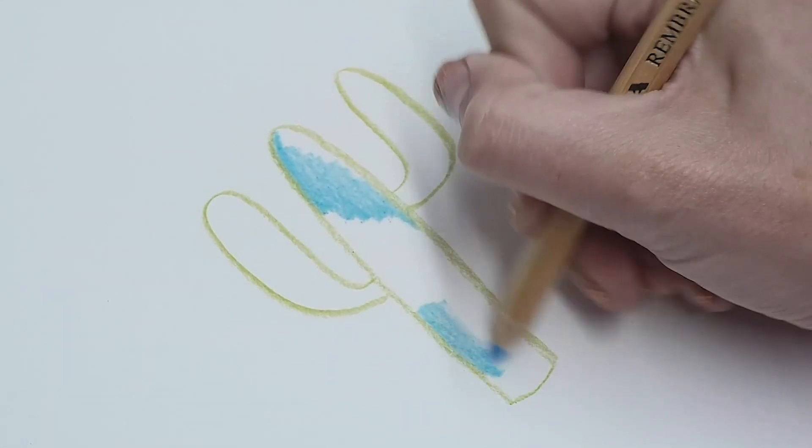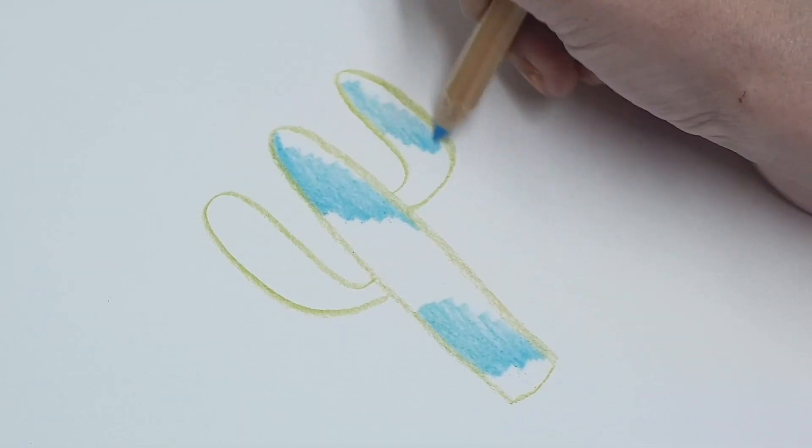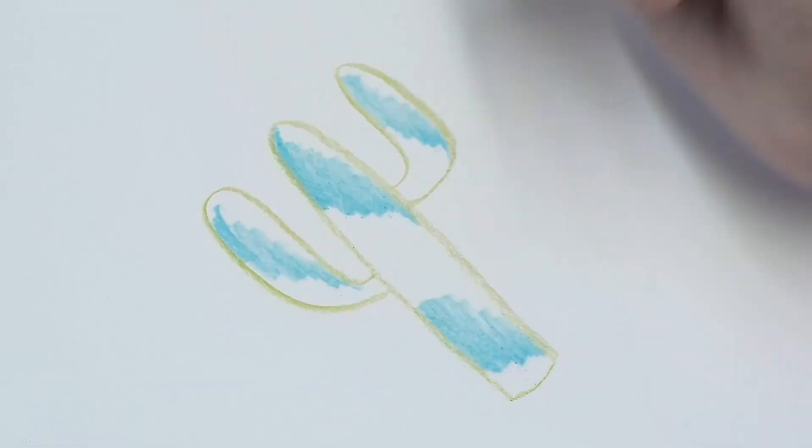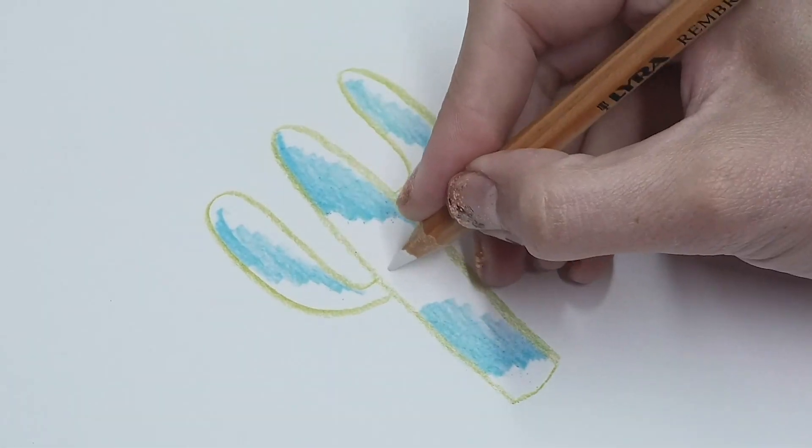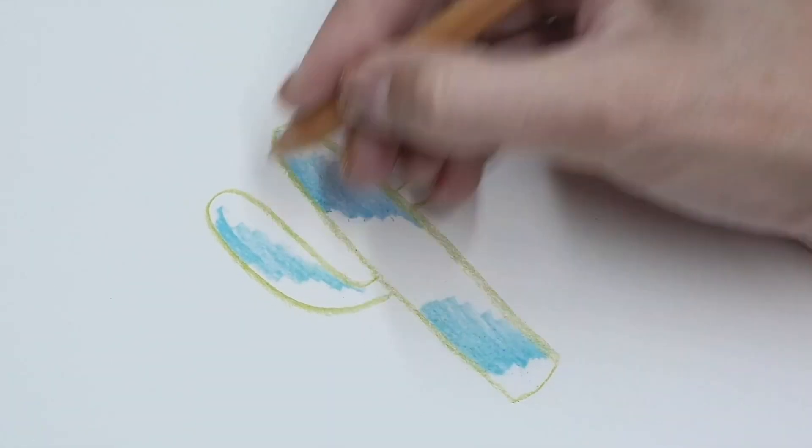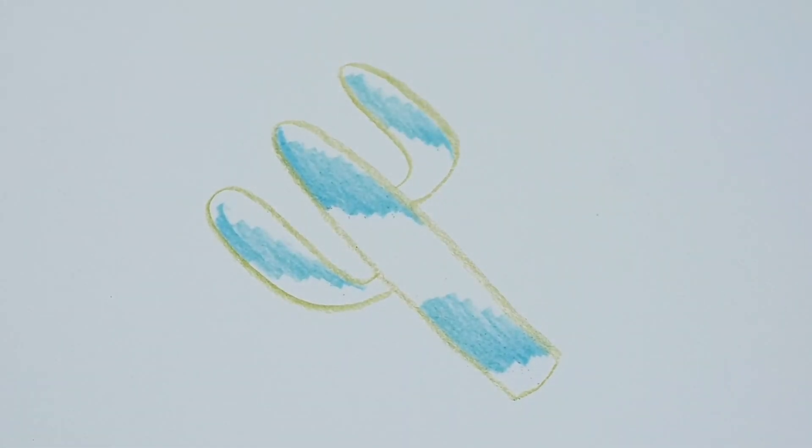Next you're gonna take the light blue and place it in a more diagonal shape. I like to take some white and stick it in there just as an undertone of stars, but you don't have to do that if you don't want to.